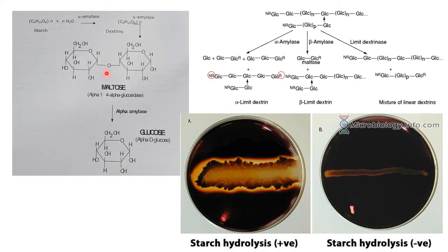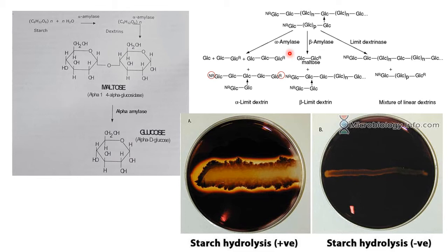In the general reaction of amylase: starch in the presence of water, acted on by alpha-amylase, is converted into dextrin — smaller chains of glucose units. Then it acts on dextrin to convert it to maltose, and maltose is then converted to glucose. That's how starch is hydrolyzed. You can also see the action of alpha-amylase, beta-amylase, and limit dextrinase, which is another enzyme that acts on starch.